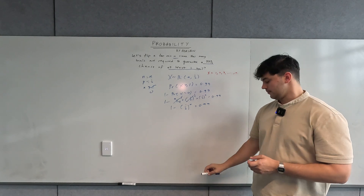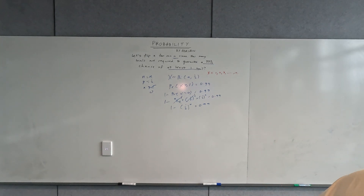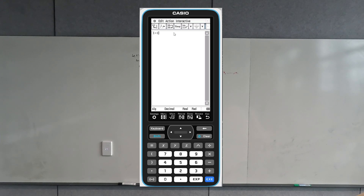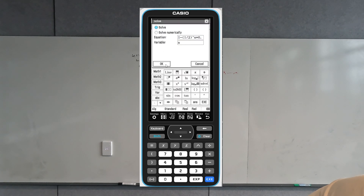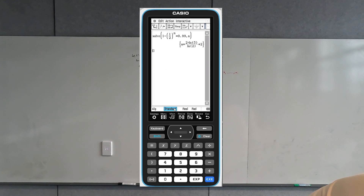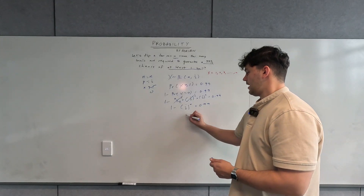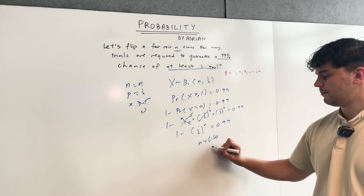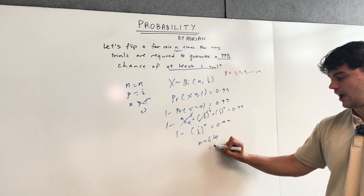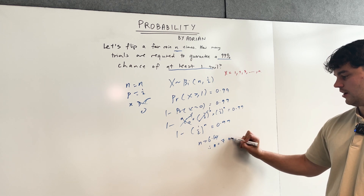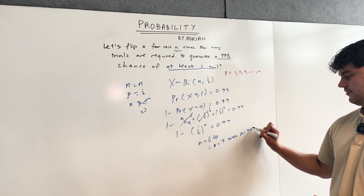From here, I can solve it on my calculator. One minus one half to the power of n equals 0.99, and solving for n gives n equals 6.64. But in all cases, even if this decimal was less than 0.5, we would have to round it up to n equals seven trials to guarantee a 99% probability.